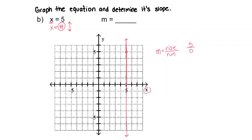And anything divided by 0 is going to be undefined. So the slope for a vertical line is always going to be undefined.